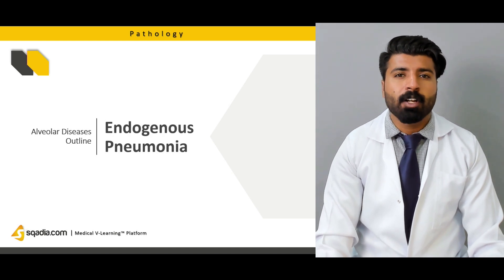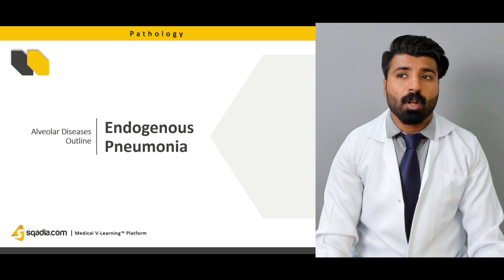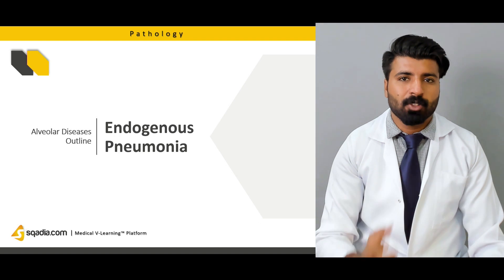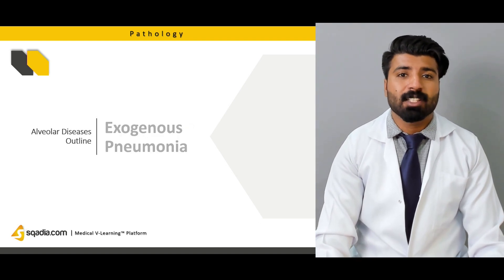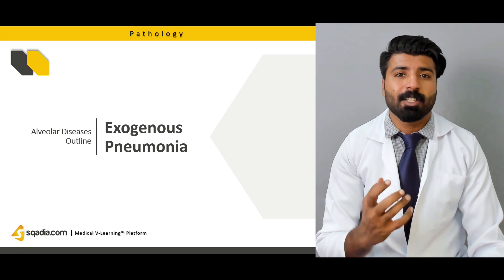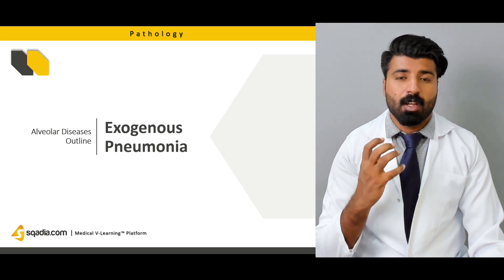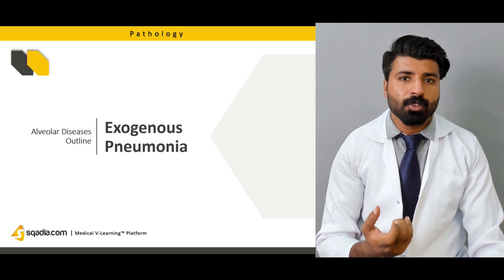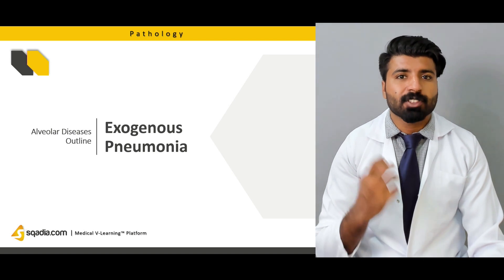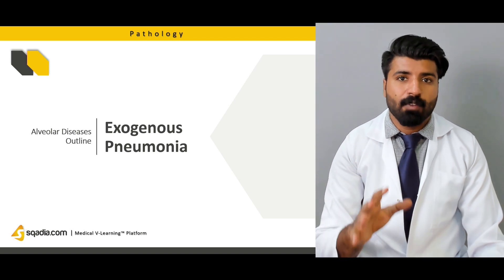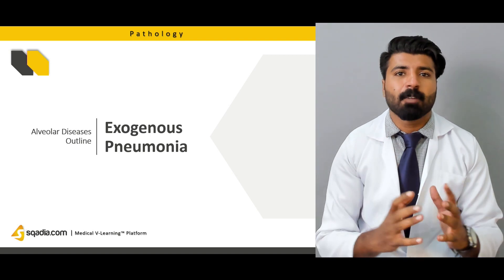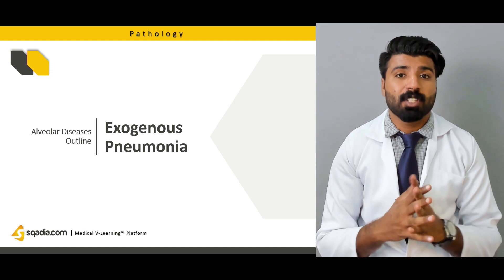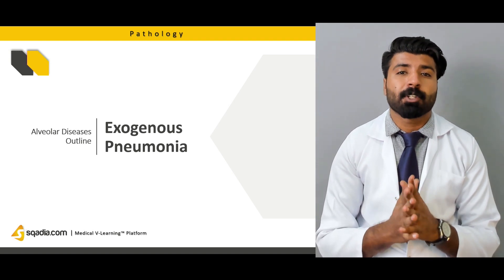Then we're going to talk about endogenous pneumonia, where we'll discuss how lipids accumulate inside of it and how pneumonia is caused because of it, and what's the pathogenesis behind it. At the end we're going to talk about exogenous pneumonia, in which exogenous lipids are involved. We're going to talk about which specific items in our daily use cause this kind of disease, in which lipids accumulate in areas around the affected tissue, and what the pathogenesis is and how the patient is going to present to us.